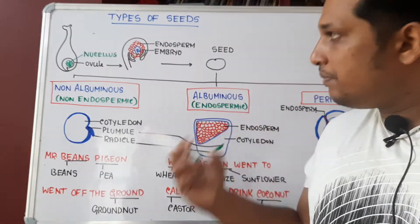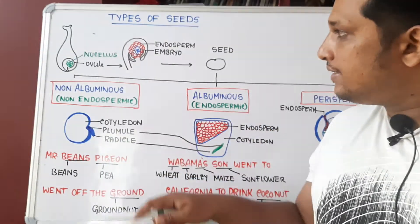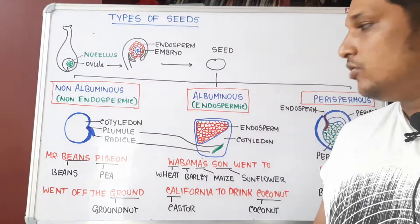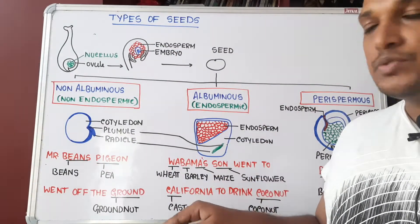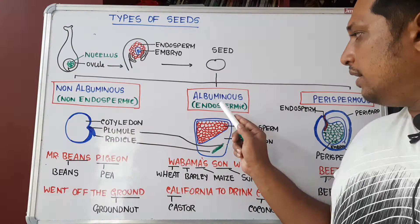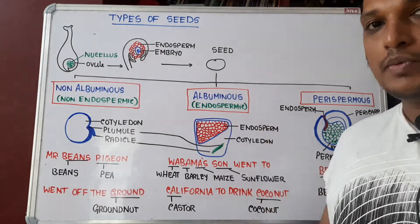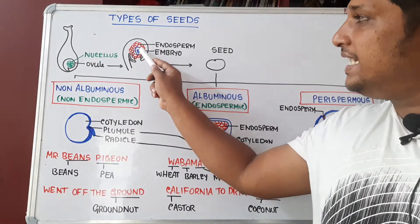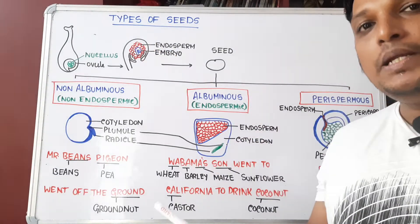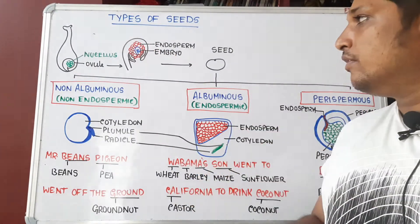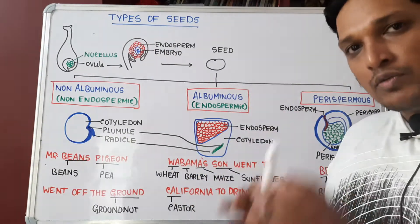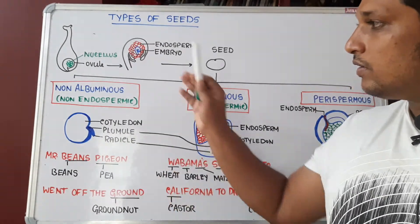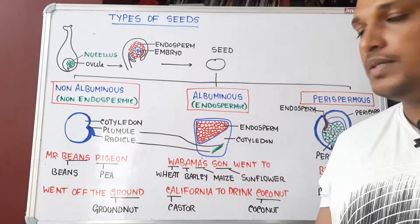At maturity, some seeds retain the endosperm — those are called endospermous seeds or albuminous seeds. Seeds which don't retain endosperm at all, completely consuming it during germination, are called non-albuminous or non-endospermous seeds.